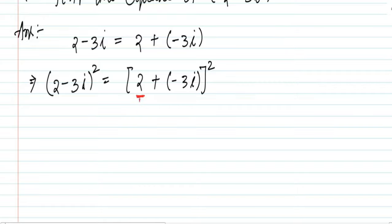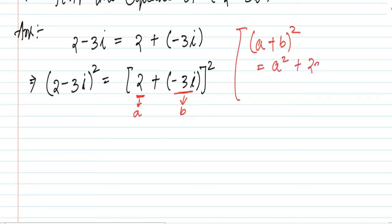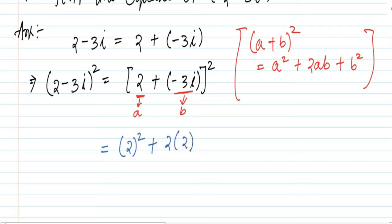Let 2 equal to a and minus 3i equal to b. We know (a + b)² equals a² + 2ab + b². So: 2² + 2 × 2 × (−3i) + (−3i)² equals 4...